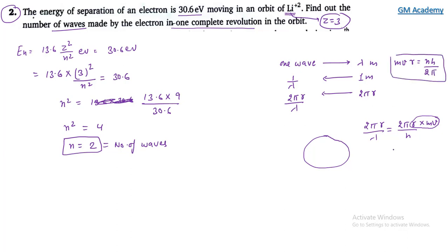Substituting mvr = nh / 2π into 2πr / λ, we solve for n, which is the number of waves in one complete revolution in the nth orbit.